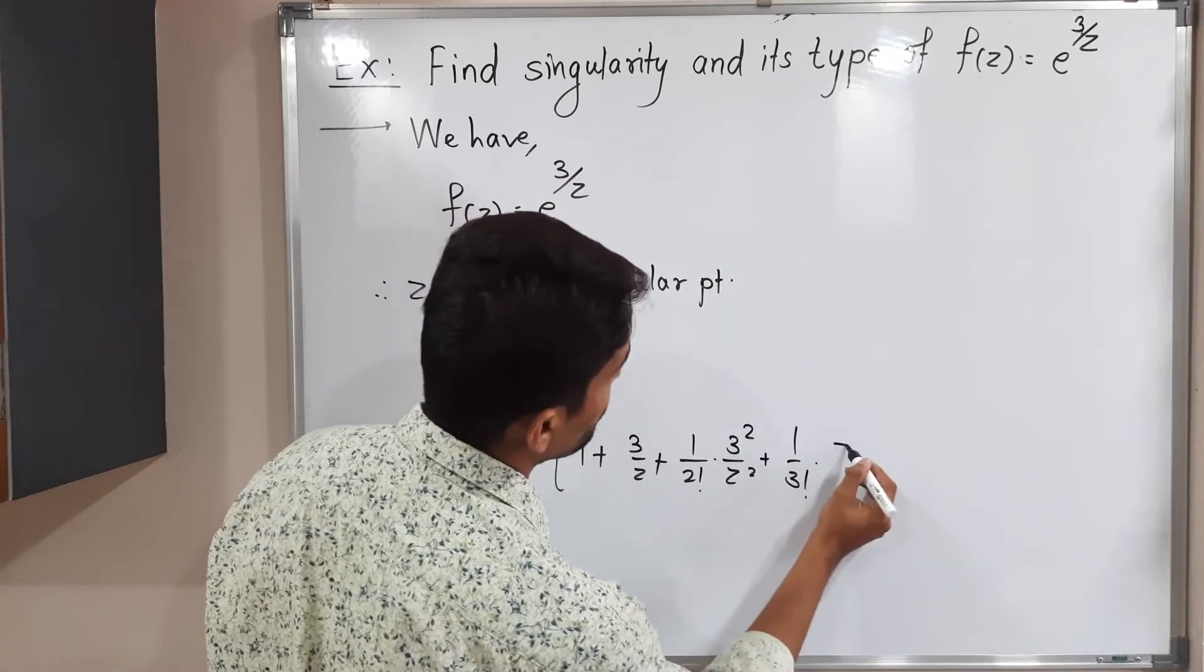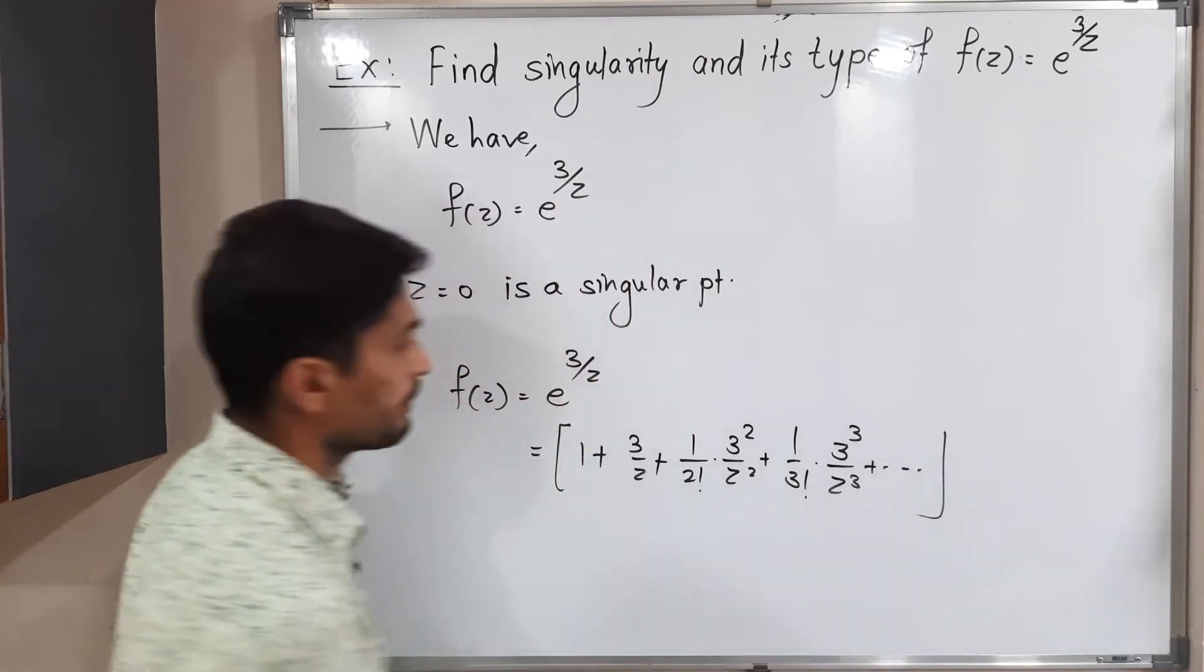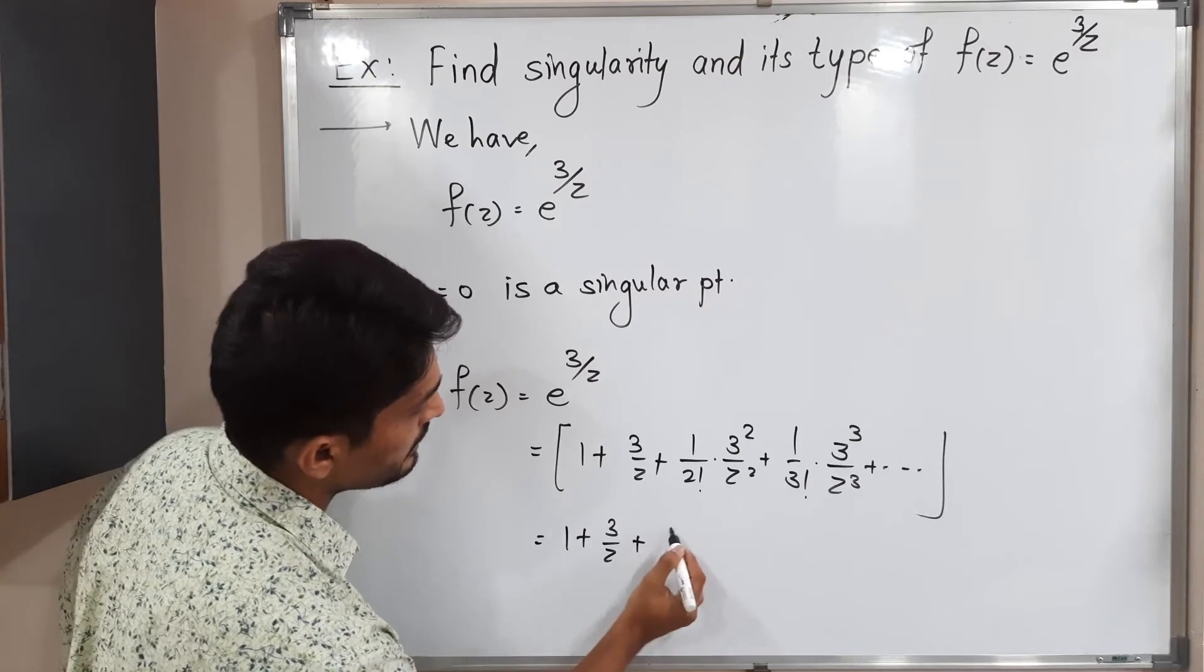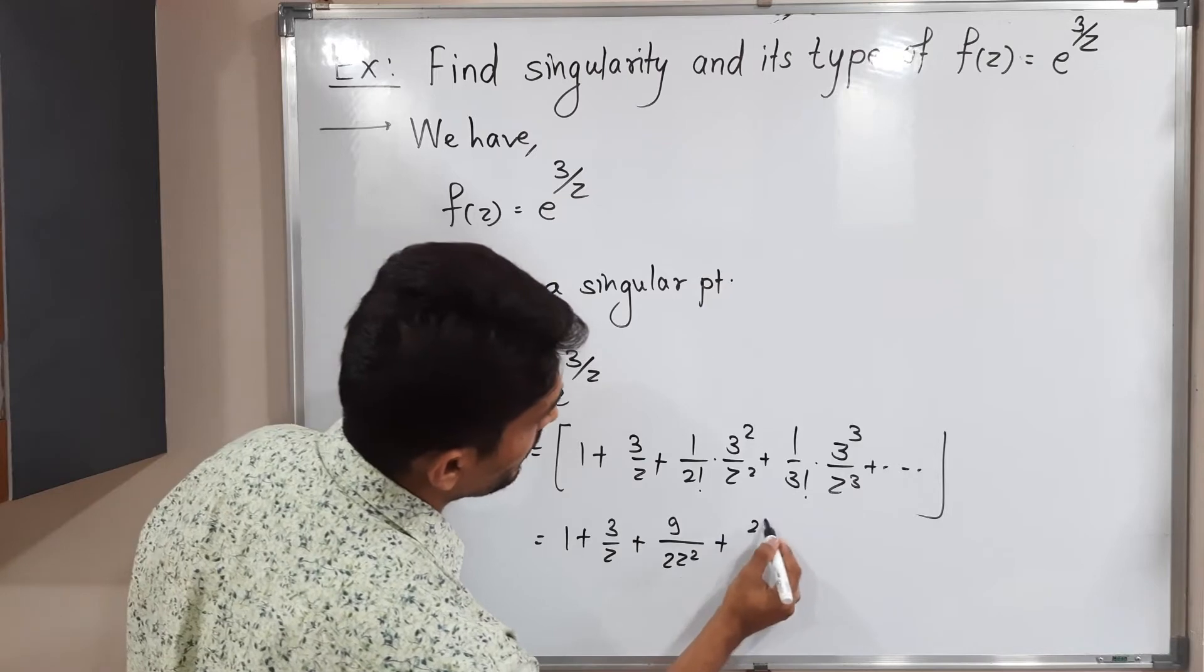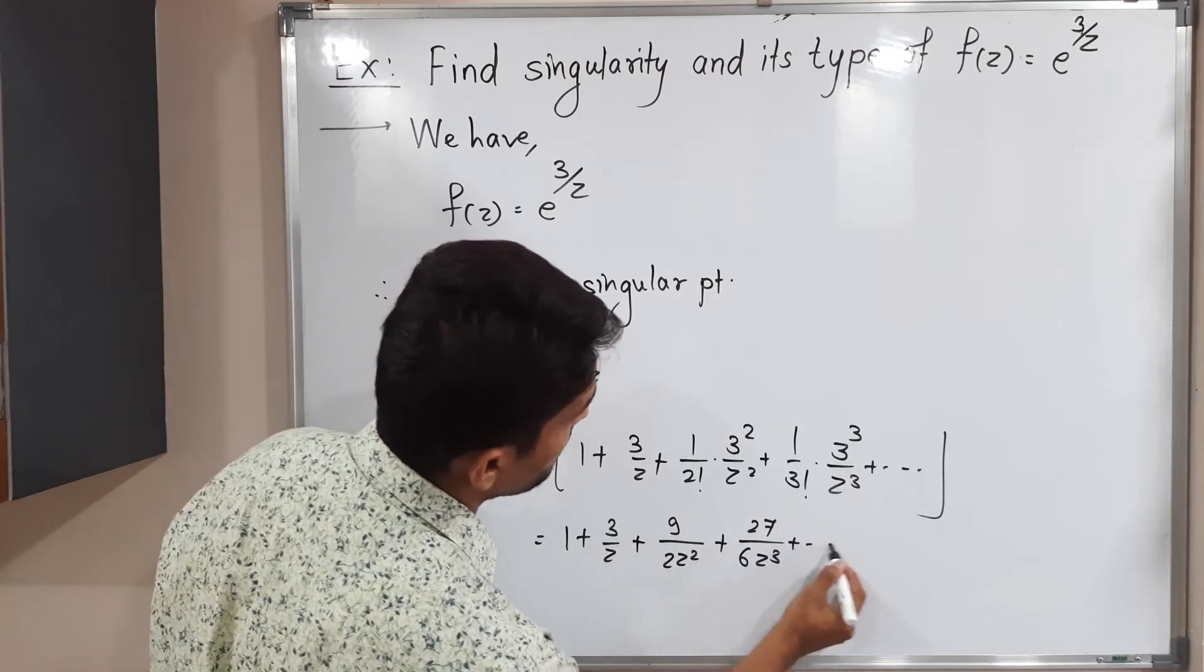And so on. This equals 1 + 3/z + 9/(2z²) + 27/(6z³) + and so on.